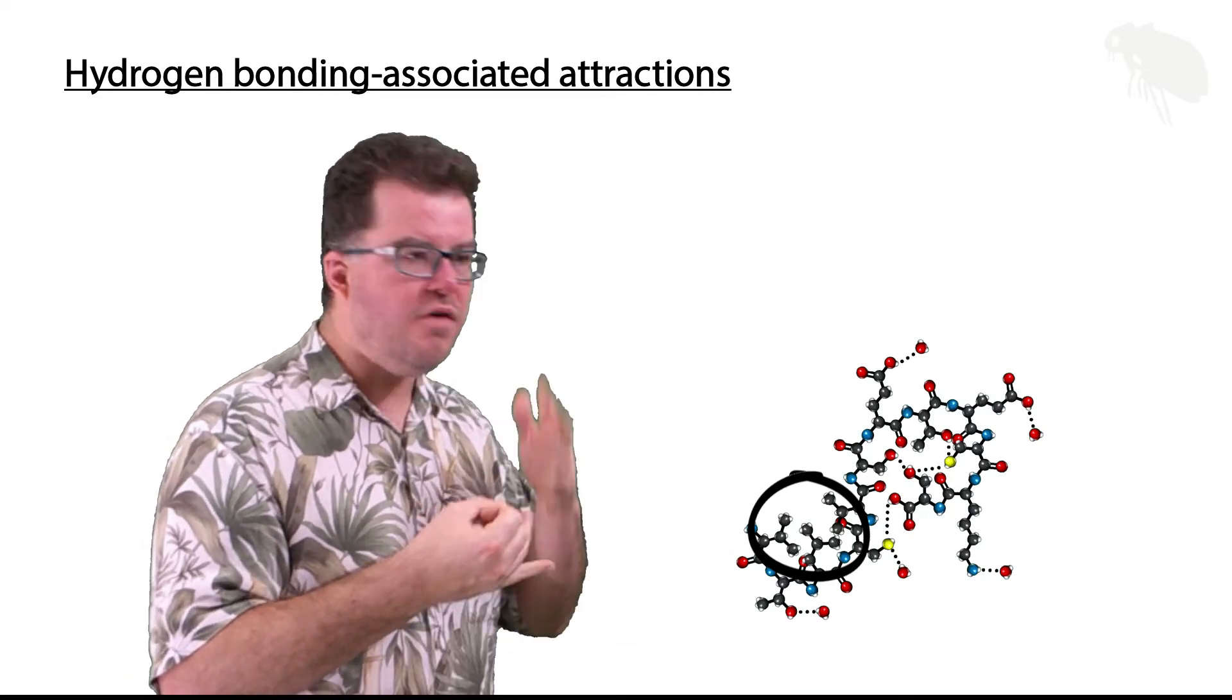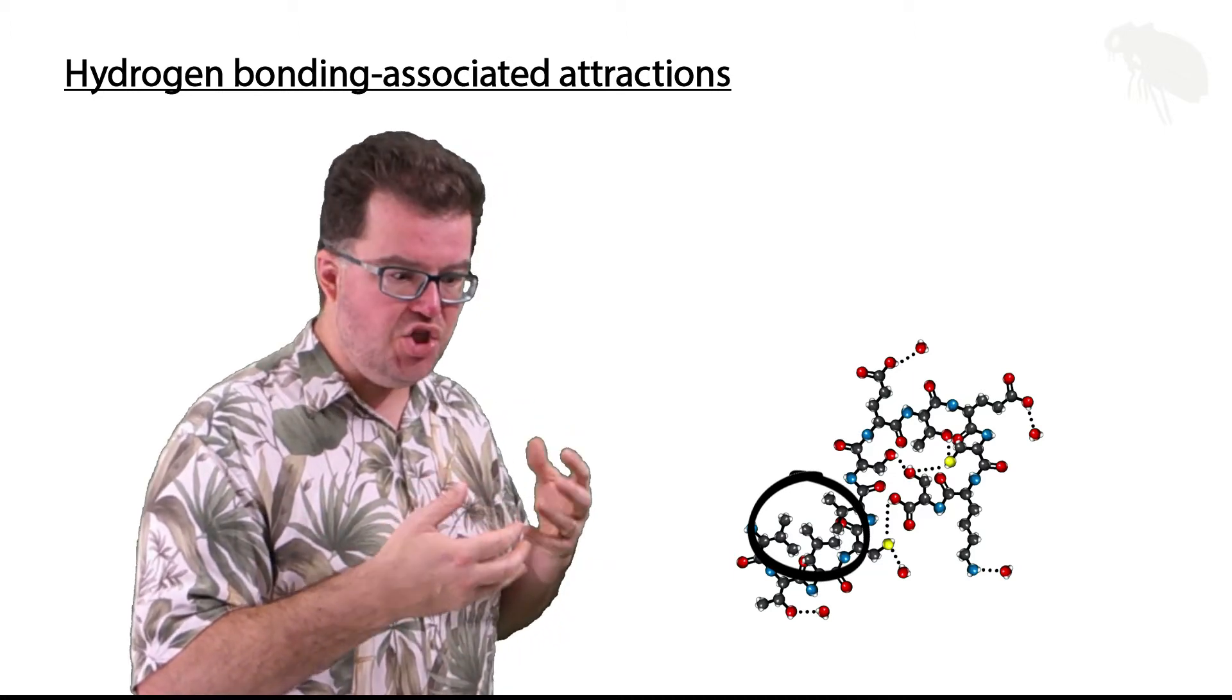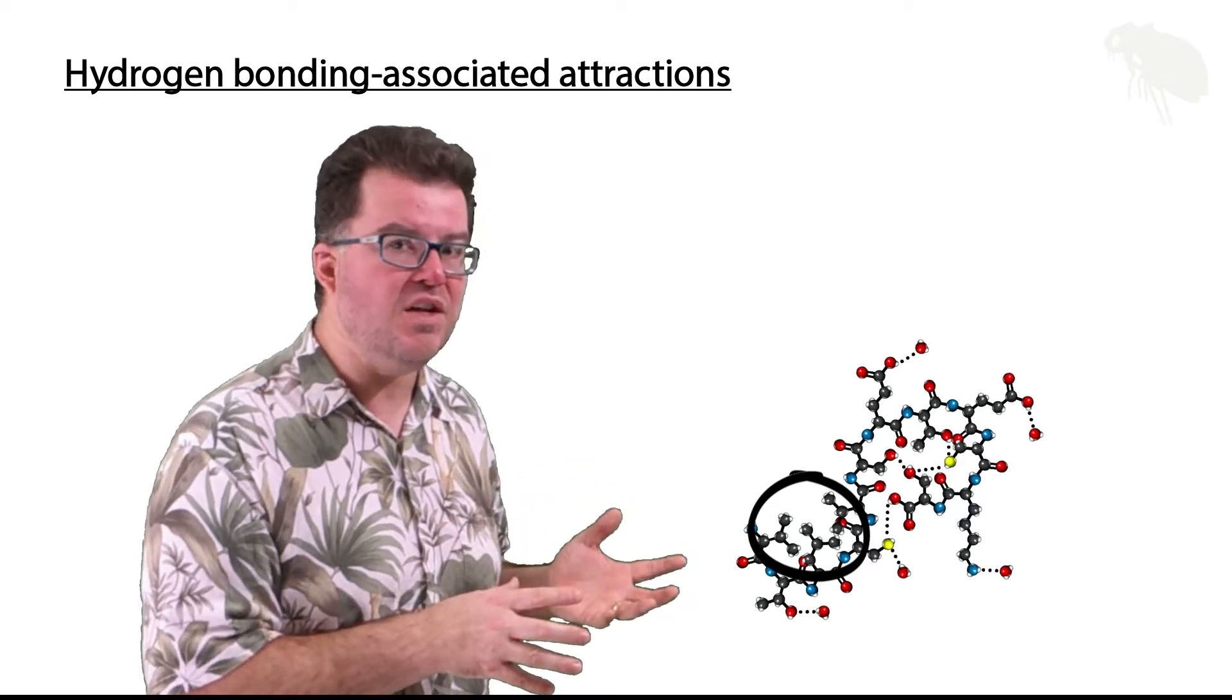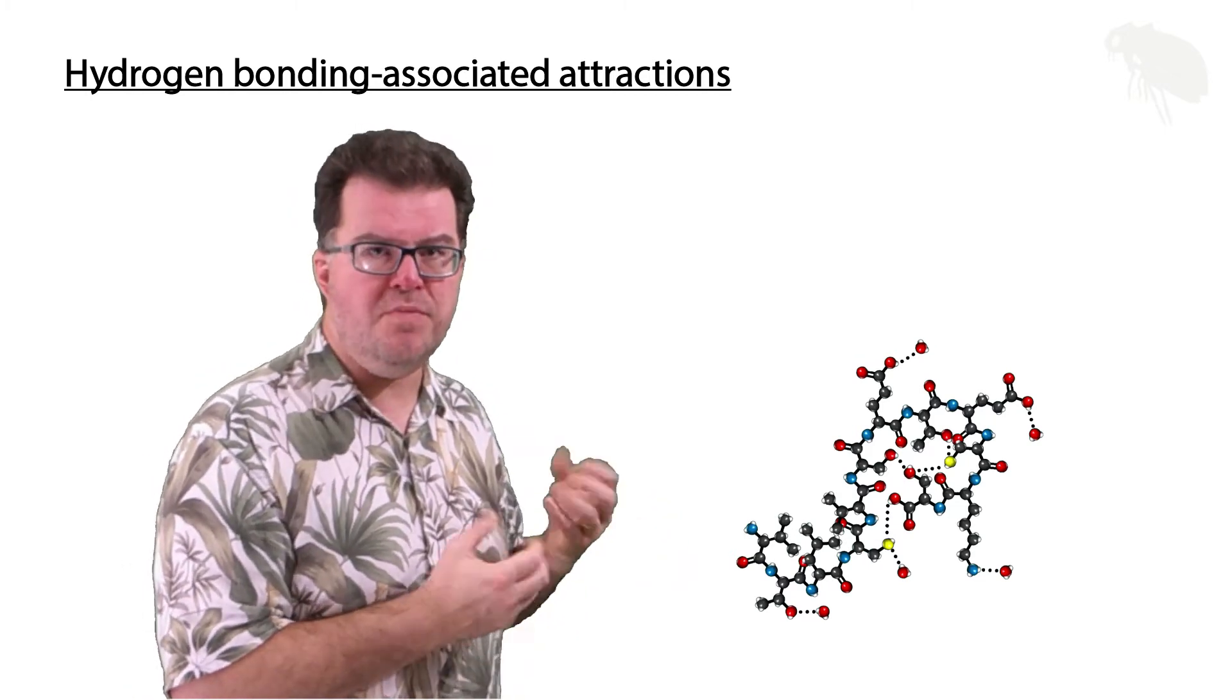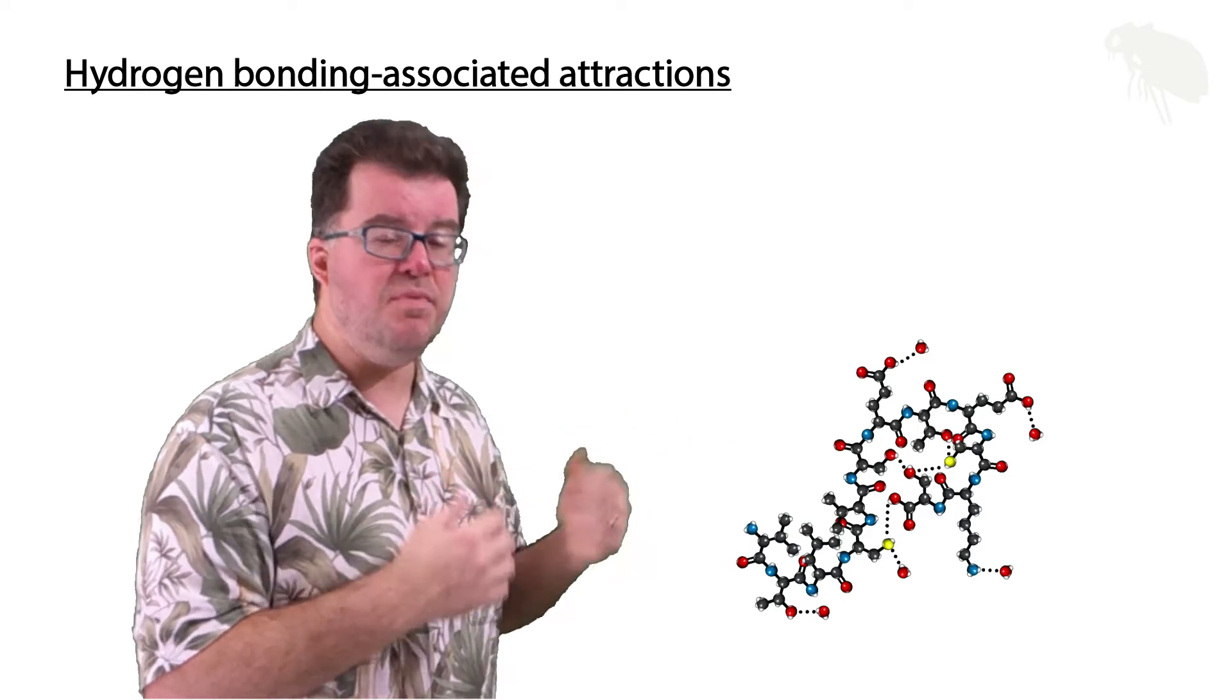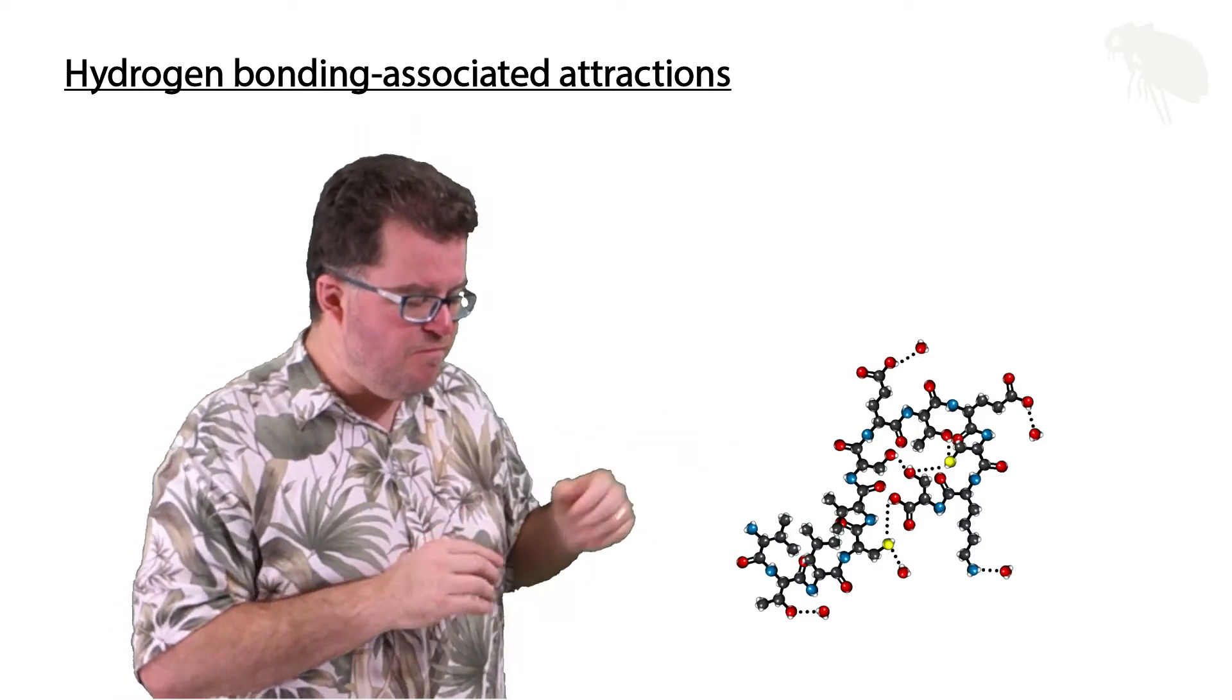Then in this other area we have a group of non-polar side chains that are clustering together. They can't hydrogen bond with water, they can't hydrogen bond with any of the polar side chains, and so instead they are excluded. It's called hydrophobic exclusion where they cluster together to get away from the water. This particular folding pattern could be produced, at least two dimensionally, by simply hydrogen bond interactions involving the side chains.